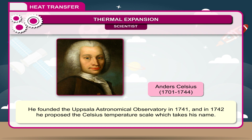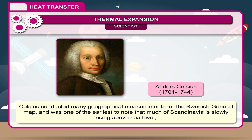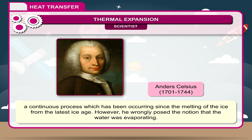Scientist: In 1742, he proposed the Celsius temperature scale which takes his name. Celsius conducted many geographical measurements for the Swedish general map and was one of the earliest to note that much of Scandinavia is slowly rising above sea level — a continuous process which has been occurring since the melting of the ice from the latest ice age. However, he wrongly proposed the notion that water was evaporating.